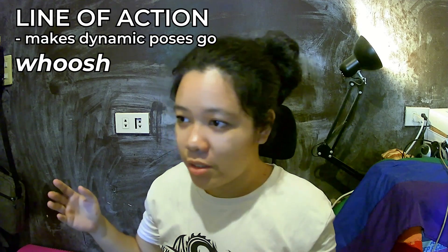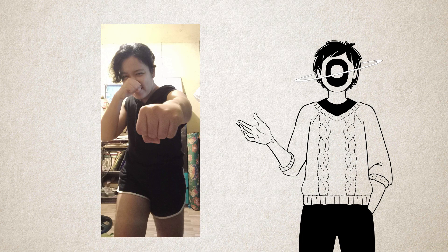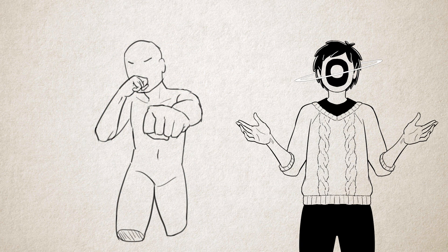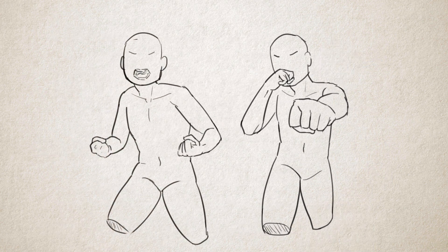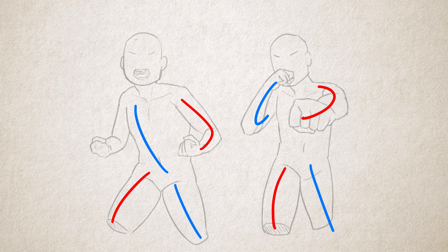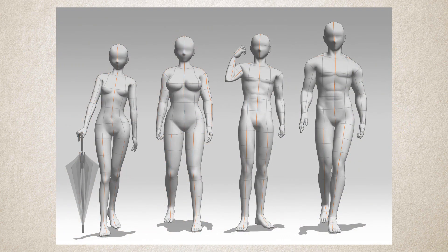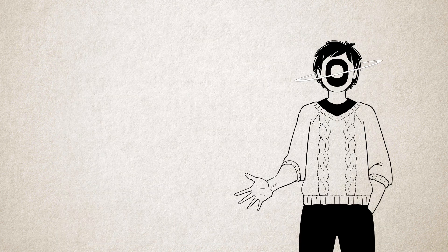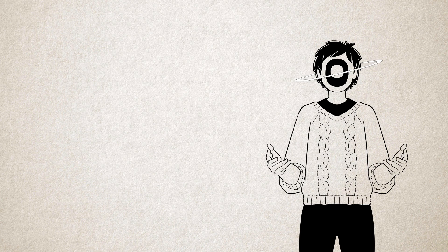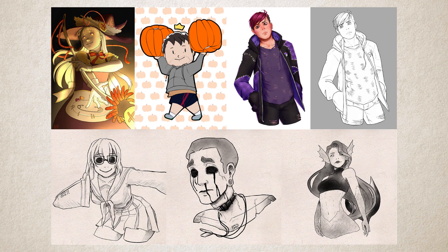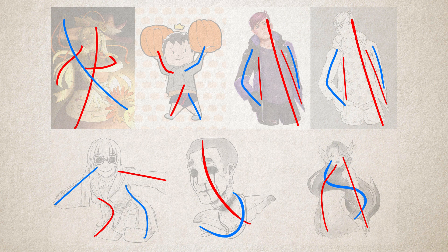Subpart 3: Contrast. Here's the fun part — line of action. We all know this; we've heard of it time and time again. It makes dynamic poses go whoosh. But what if you don't want poses to go whoosh — what if you want poses to stay still? Contrasting shifts of body parts is where it's at. Our bodies have weight affected by gravity, so our bodies naturally compensate for shifts in weight so we don't fall face first. It's why we naturally walk with opposite arms and legs — trying to walk with the same arm and leg feels unstable.